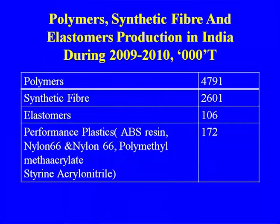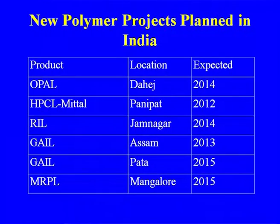Now let us discuss the production status of the polymer, synthetic fiber, and elastomer industry in India. Polymer production is the highest, followed by synthetic fiber, elastomer, and performance plastics — meaning specialty plastics such as ABS (acrylonitrile-butadiene-styrene), nylon 66, nylon 6, polymethyl methacrylate, and styrene-acrylonitrile combinations. These are the production figures for 2009-2010. Some new polymer projects are being planned or are at the erection stage, including OPAL by ONGC at Dahej.